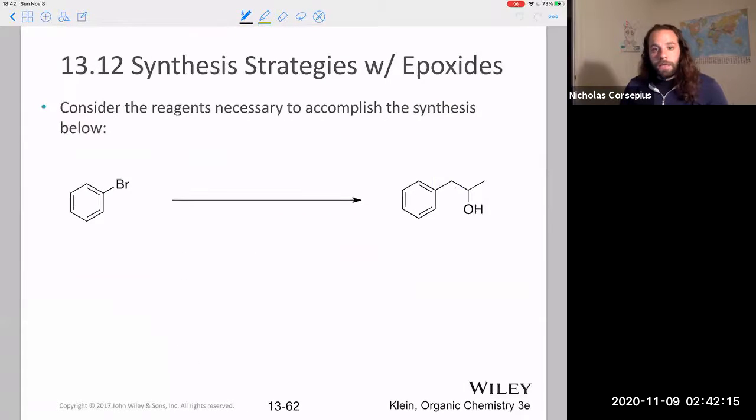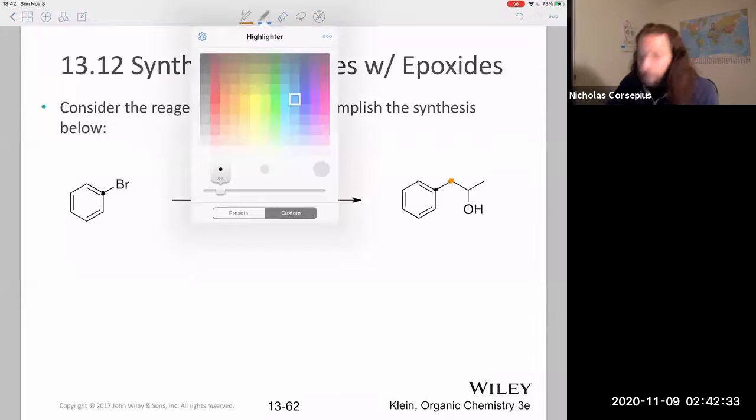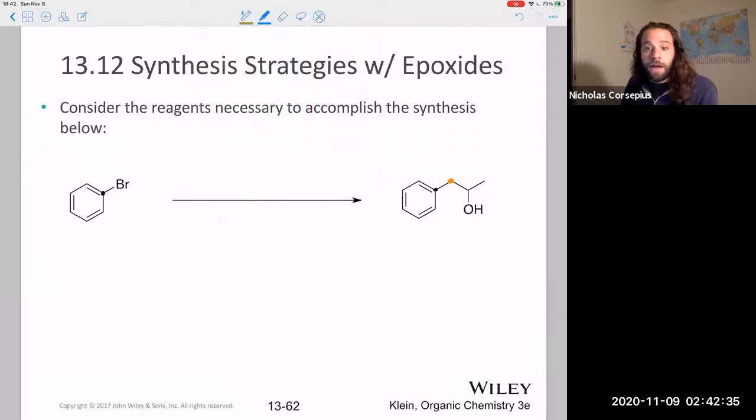So if we just want to do an example here, what is a synthesis that I could use to convert my substrate to my product? One of the things I'm going to note is I'm going to need to create a new bond between this carbon, this carbon here. And it's one of the key steps when you're planning a synthesis strategy: figure out what bonds have been created. You're going to need to create a bond. It's got to be this guy here.